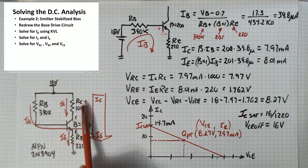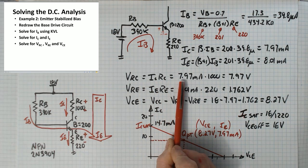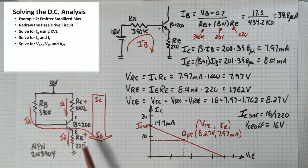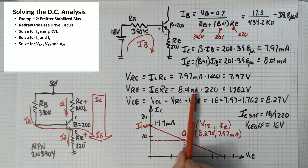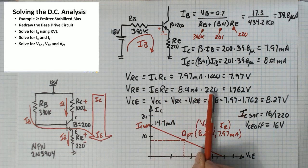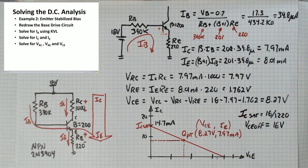VRC, the voltage across this resistor, is just IC times RC, 7.97 times 1000 so 7.97 volts. This resistor here has a little bit more current through it, it's IE times RE so 8 milliamps times 220. That resistor has 1.762 volts across it.